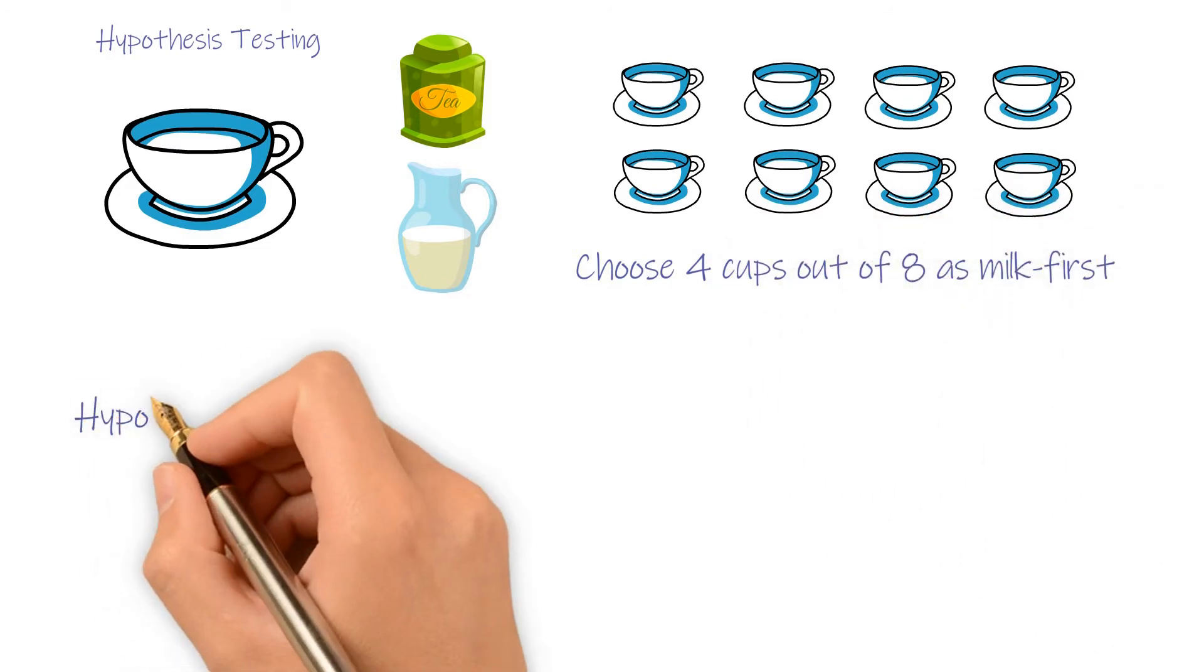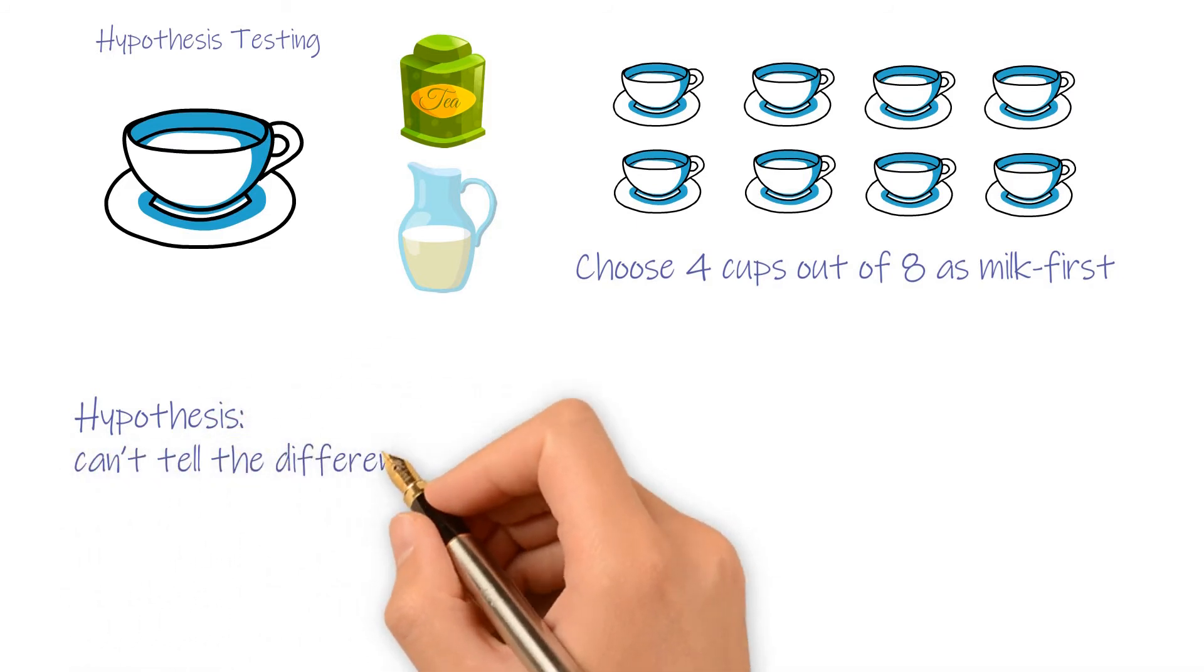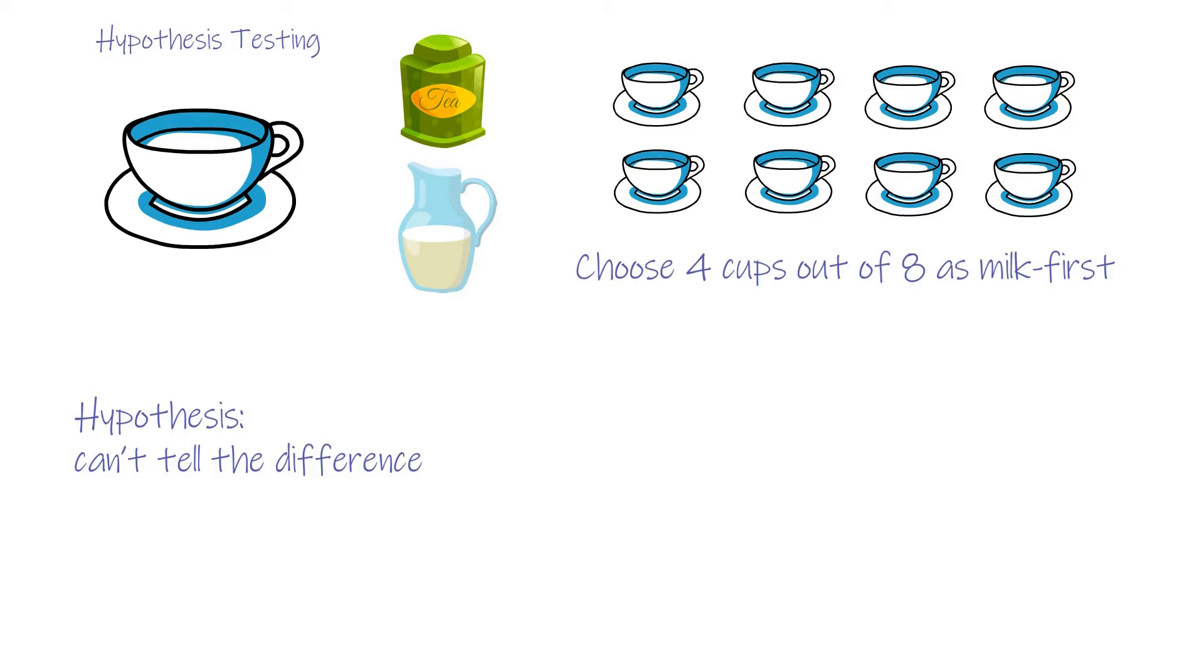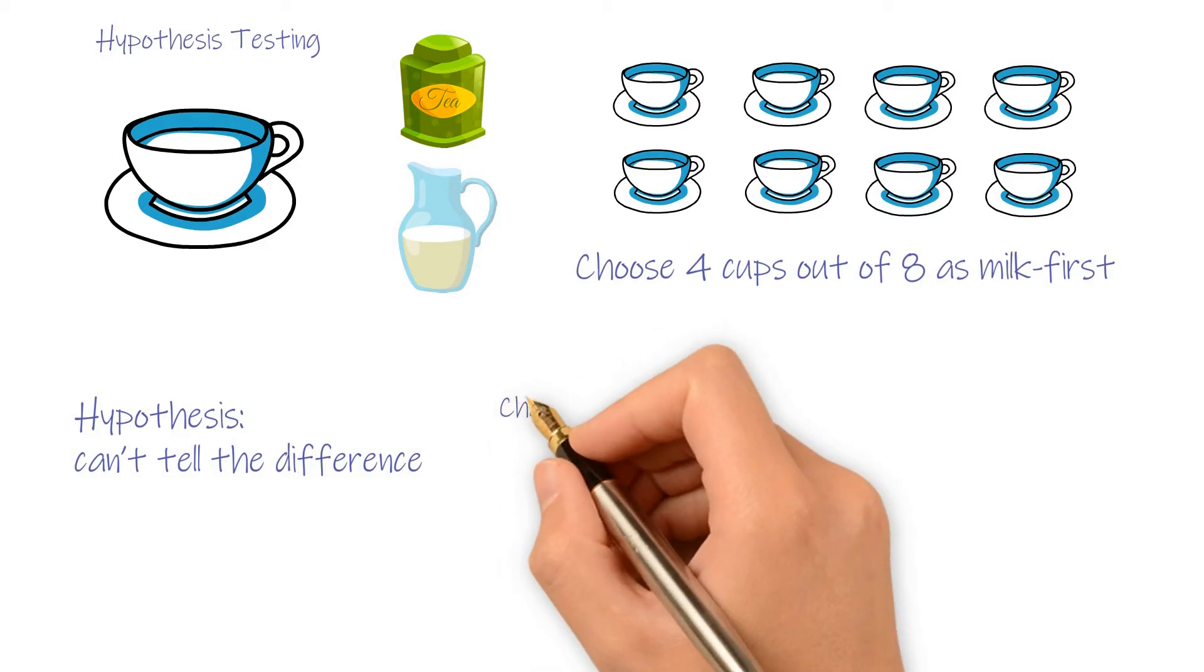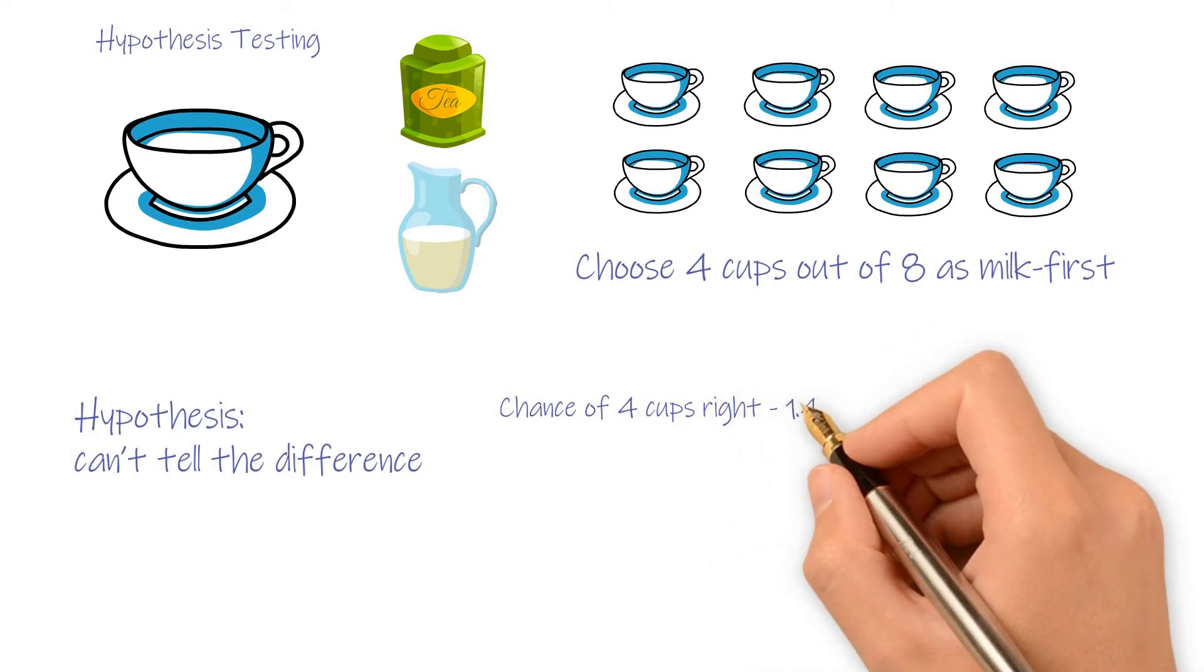If we assume she can't tell the difference and only choose randomly, what is the chance we can get all 4 cups right? That would be expected 1.4%, which is quite rare.